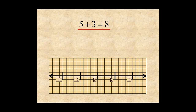On a number line, to add 5 plus 3, you start at the origin and count 5 units right, and then 3 units right. Since you end up at 8, you can see that 5 plus 3 equals 8.